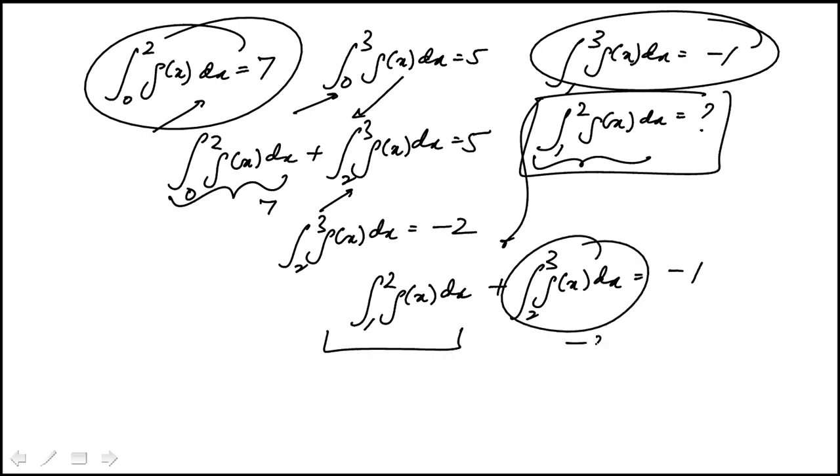This is given to us as minus 2, which means that 1 to 2 g of x dx would be minus 1 plus 2. Moving that to the other side, that's equal to 1. That's the answer.